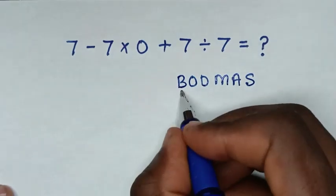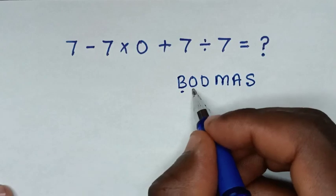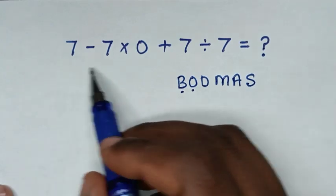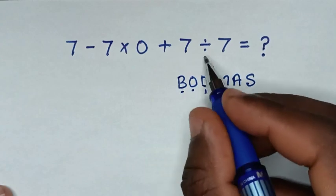B stands for brackets, and we don't have brackets in this problem. O is for order or exponents, we don't have that. D for division, we have division here.